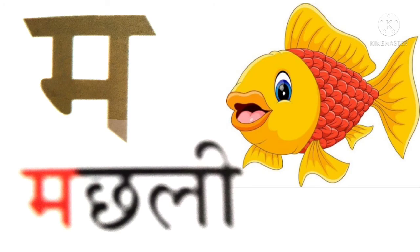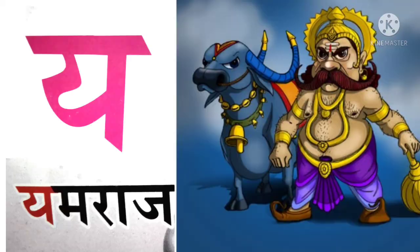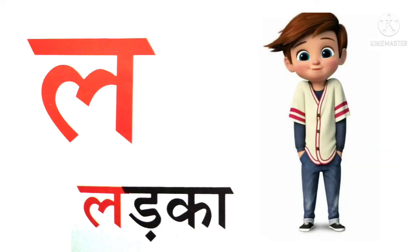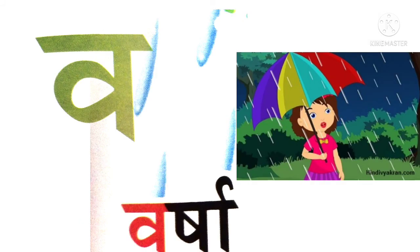म से मछली (Ma se Machhli), य से यमराज (Ya se Yamraj), र से रस्सी (Ra se Rassi), ल से लड़का (La se Ladka), व से वर्षा (Va se Varsha).